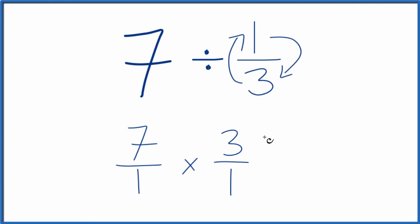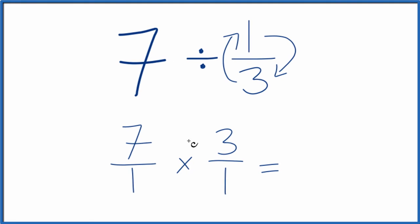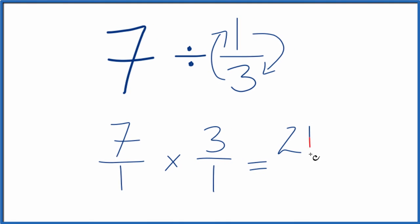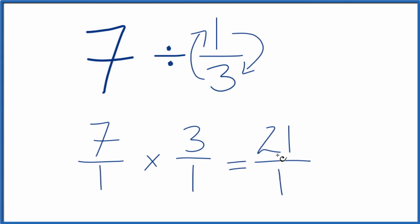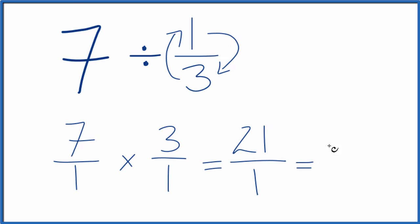Now we're just multiplying fractions. We multiply the numerators and then the denominators. So 7 times 3, that's 21. 1 times 1 is 1. So we end up with 21 over 1. And if we divide 21 by 1, we just get 21.